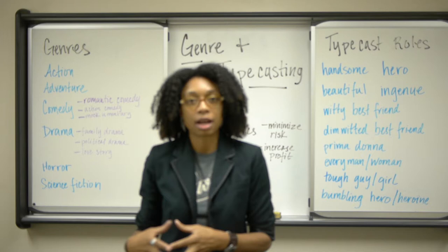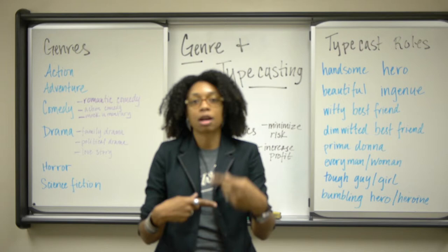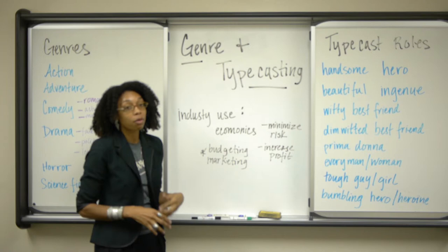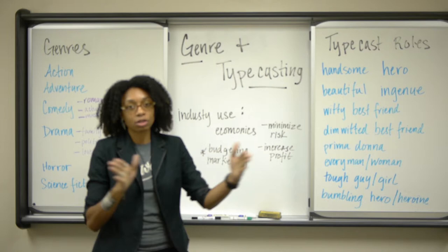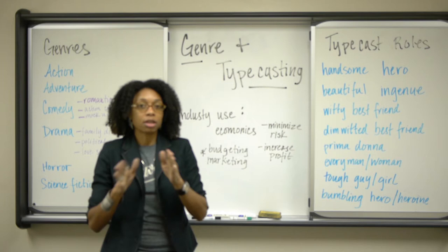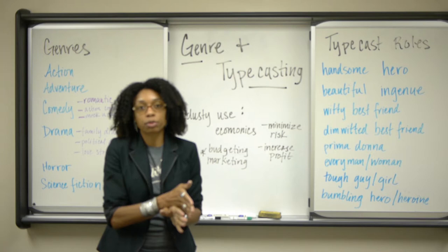Different production companies started taking on different genres because they could now predict their profit and adjust their budget accordingly. Genre is used for budgeting. If you're doing a romantic comedy, you're not going to get as large a budget as an action film. That's because they've seen that an action film has a larger audience while a romantic comedy has a smaller one. So if you want to make a profit, don't spend as much from the outset so that whatever comes in covers production costs and gives you a profit.